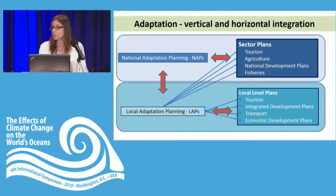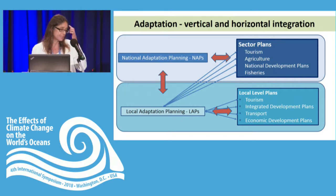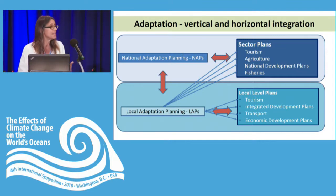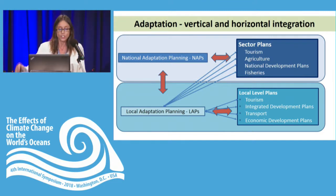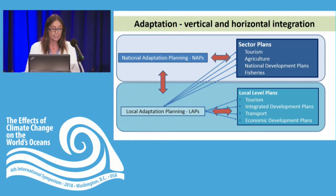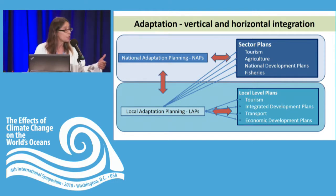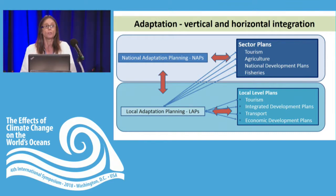A final area I want to leave you with is how we take knowledges at different scales and begin to integrate information. If we look at the local adaptation planning process — which leads to a local adaptation plan driven by communities — the question is how do you insert that information into sub-national and national adaptation planning processes, into the so-called NAPs? But not only into national adaptation planning processes, but also into sector planning processes in tourism, agriculture, and fisheries. And of course, how do we mainstream that information derived at a community level horizontally into local level planning processes looking at tourism, transport, or economic development?